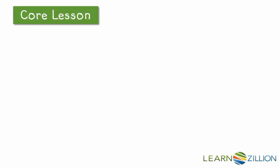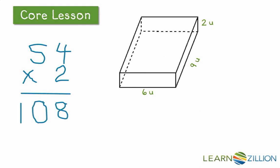So let's practice that. Let's look at this prism and multiply the base times the height. And we know that 6 times 9 is equal to 54. And since the height is 2, we're going to double that 54. And that will give us 108 cubic units.